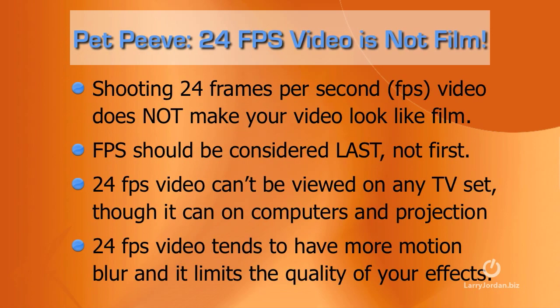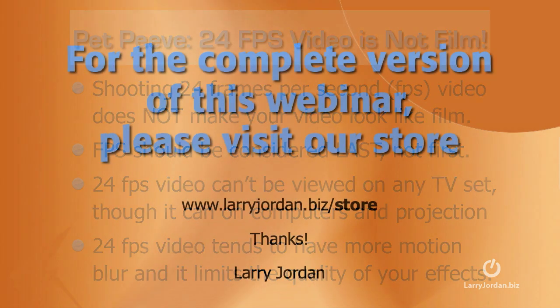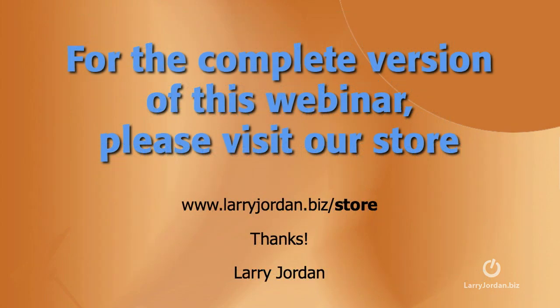The whole idea for this seminar got started when I was touring England in February of this year. Students would come up to me saying, I want to make my video look more like film so I'm shooting at 24 frames a second. Well, shooting at 24 frames a second doesn't make video look like film. It makes your video look like it's got motion blur, a little stuttery maybe — but it doesn't make it look like film. There is far more to the craft than simply the frame rate. The frames per second should be considered last, not first, in your goal to make your video look better. A 24 frame per second video can't be viewed on any TV set anywhere in the world. It can be viewed at 24 frames on computers and if you're projecting it, but it can't be viewed on TV sets or DVDs.